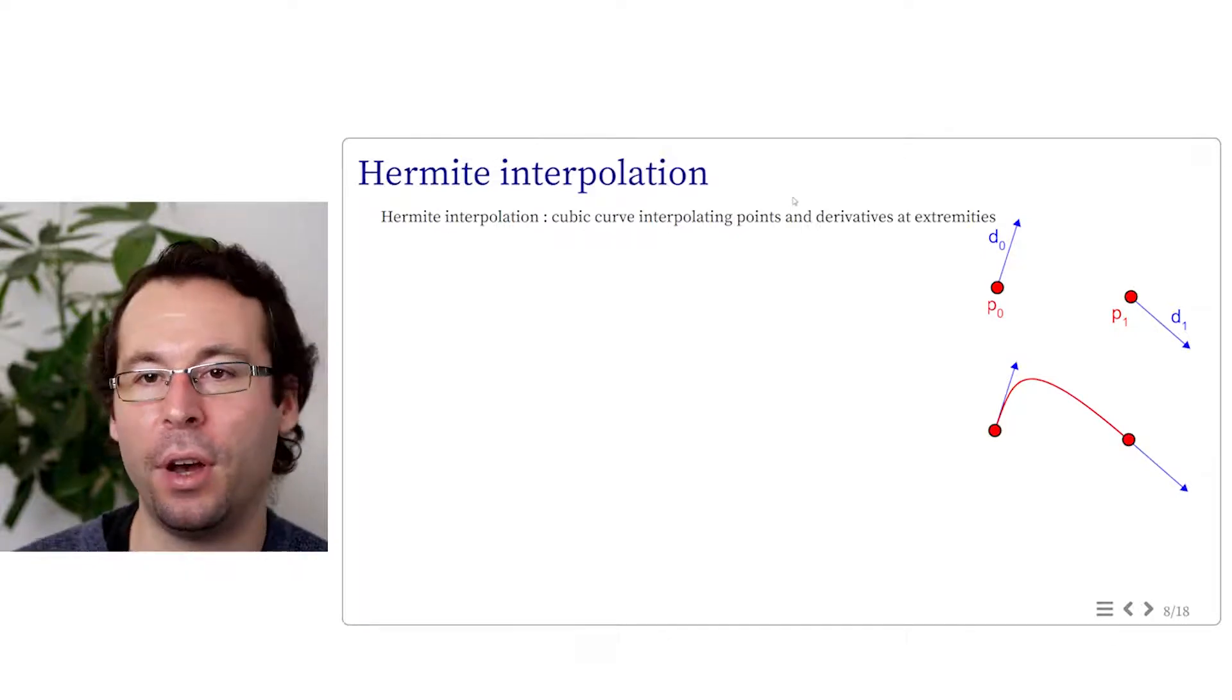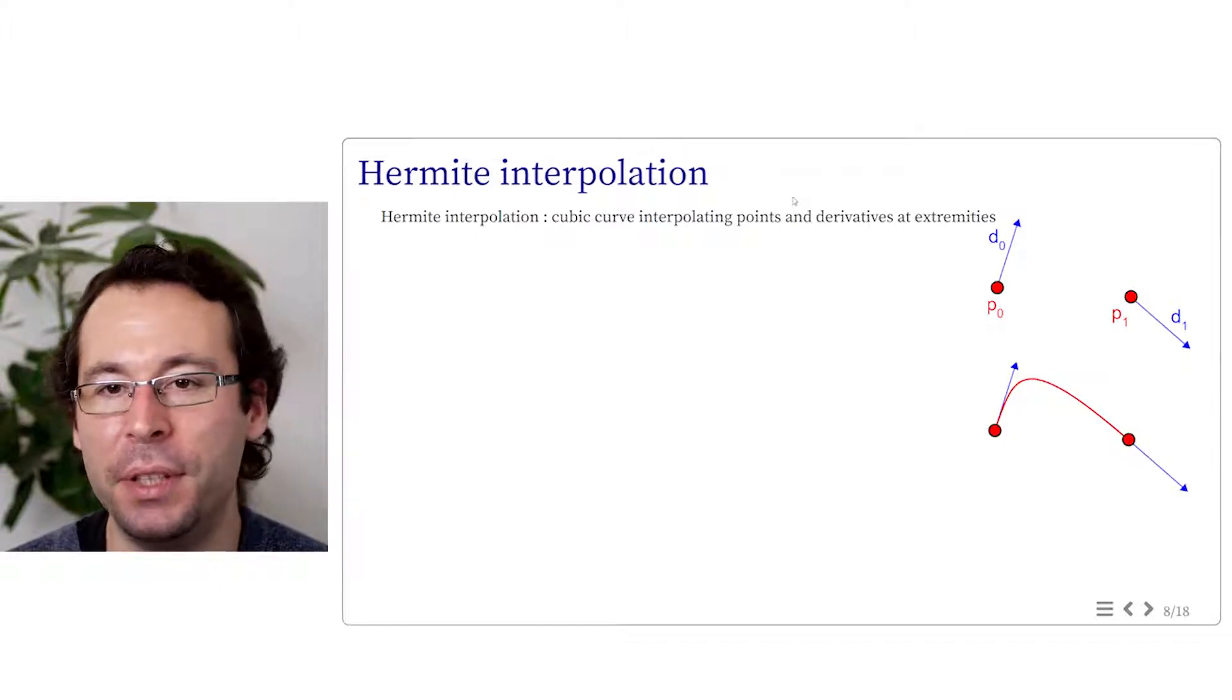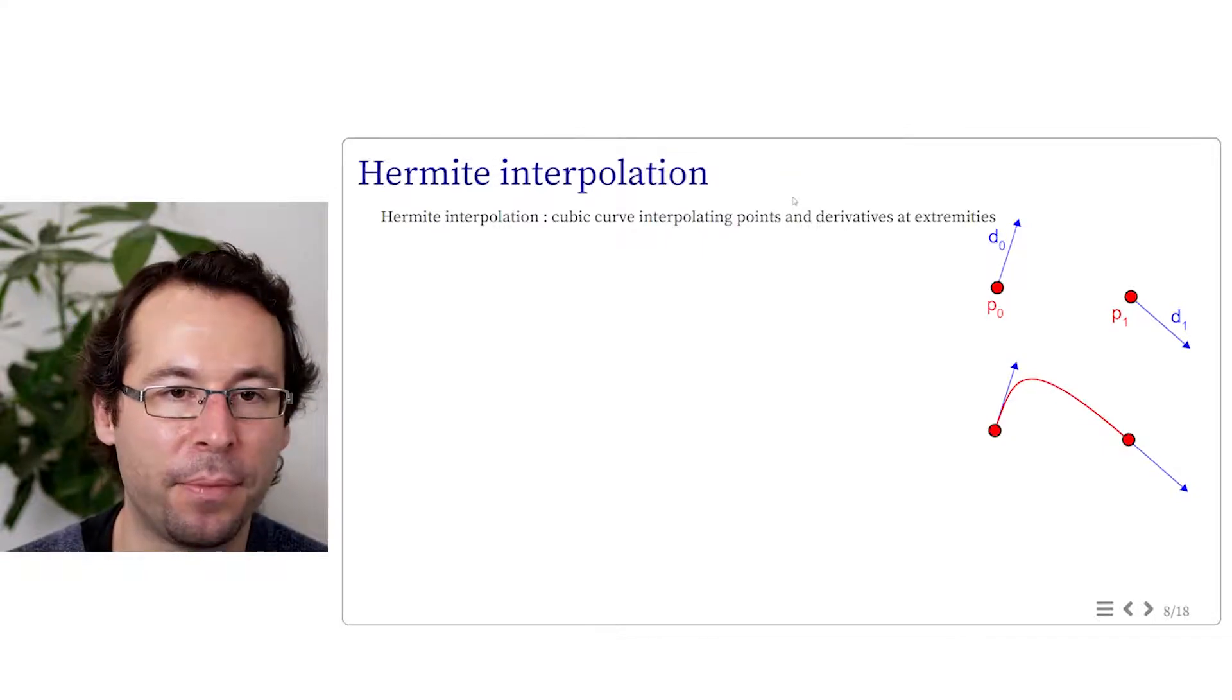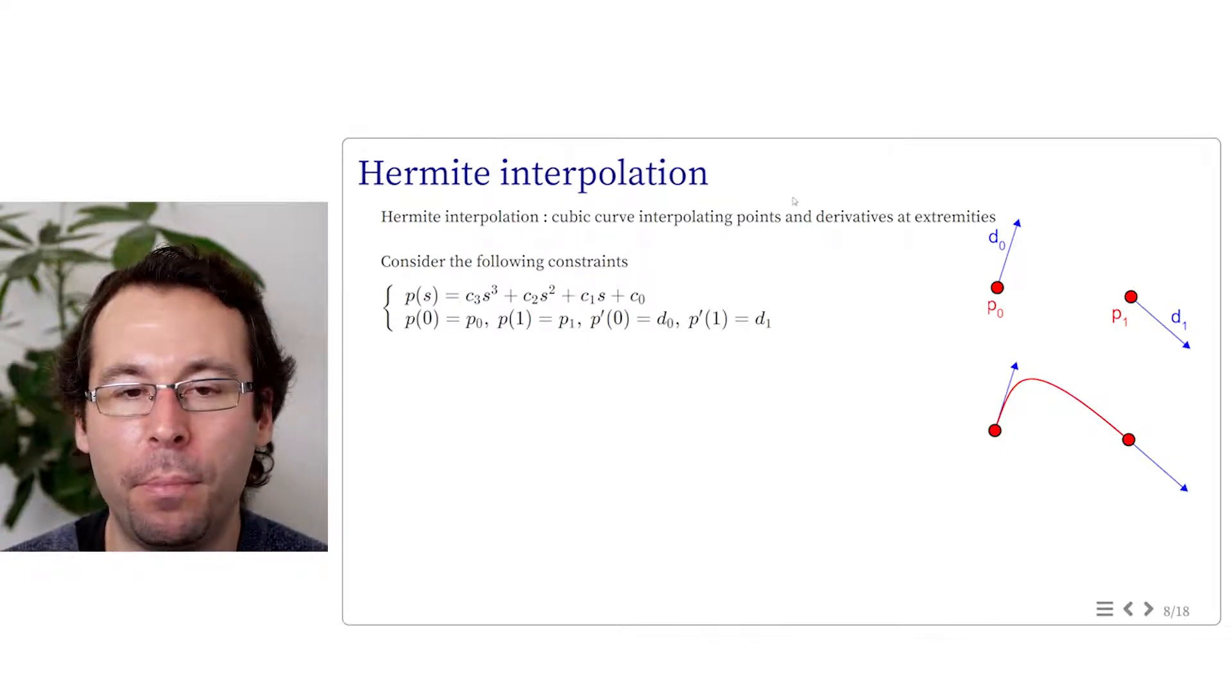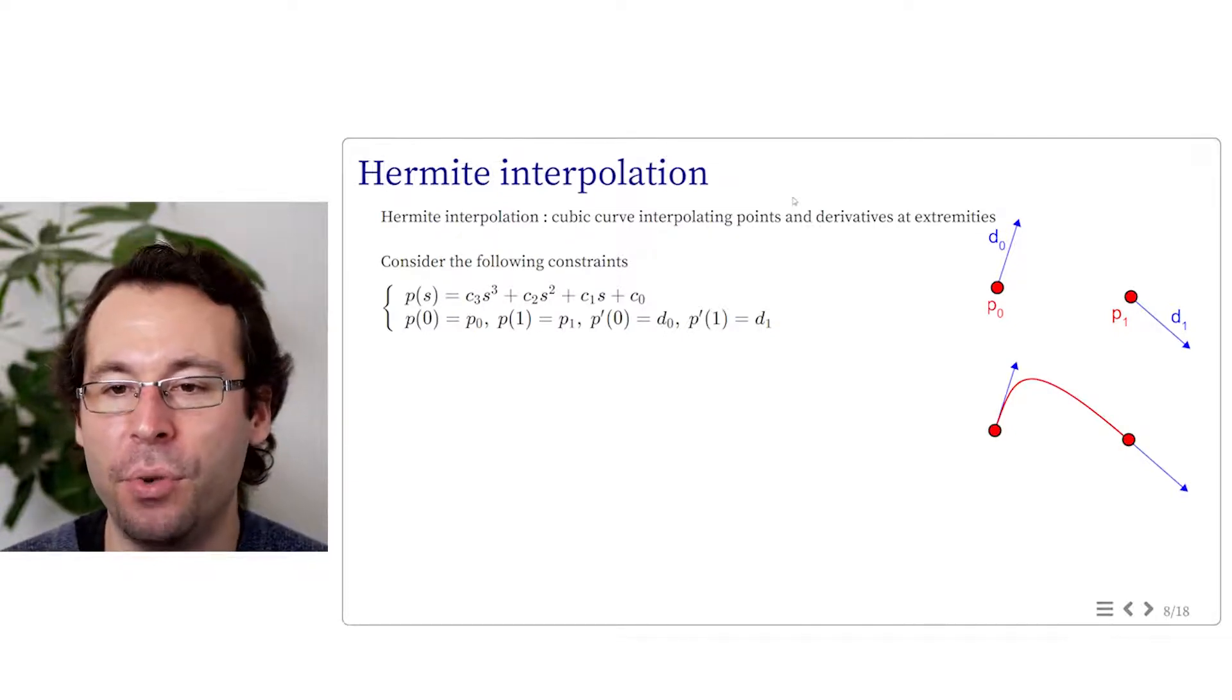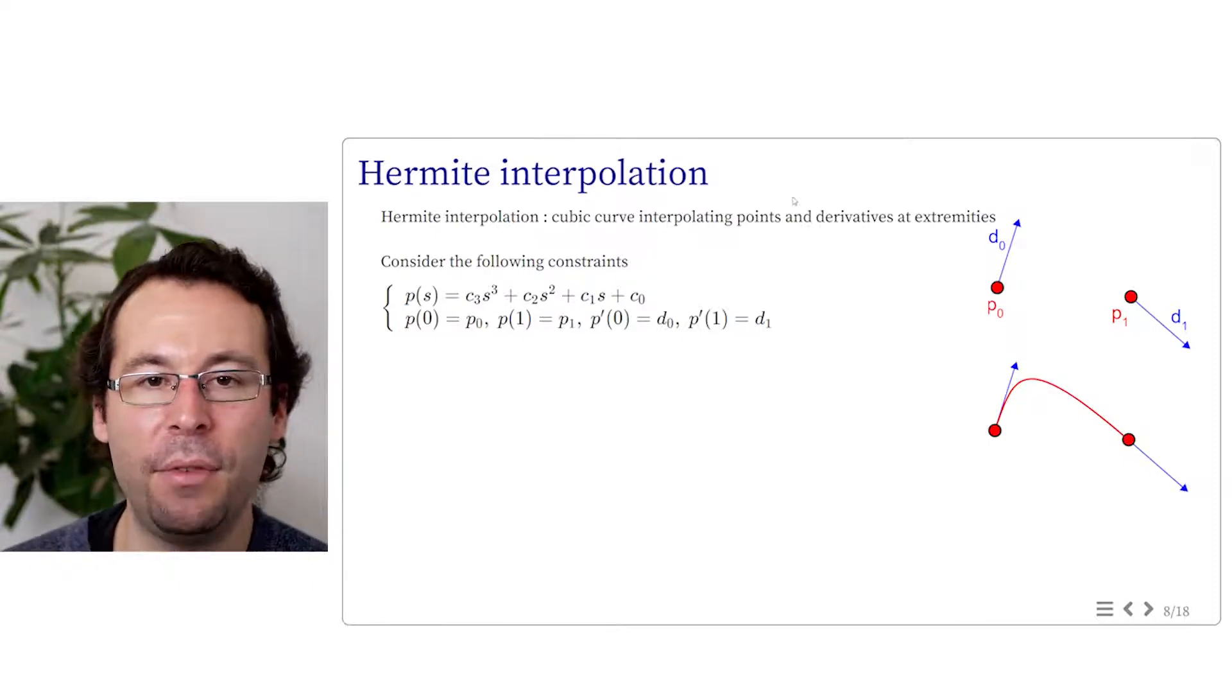We are looking for a cubic curve that starts at P0 at time t equals 0 and goes to P1 at time t equals 1. Then we also want the derivative of this curve to be D0 at t equals 0 and D1 at t equals 1. We have four constraints. So we should be able to solve them using a cubic polynomial.